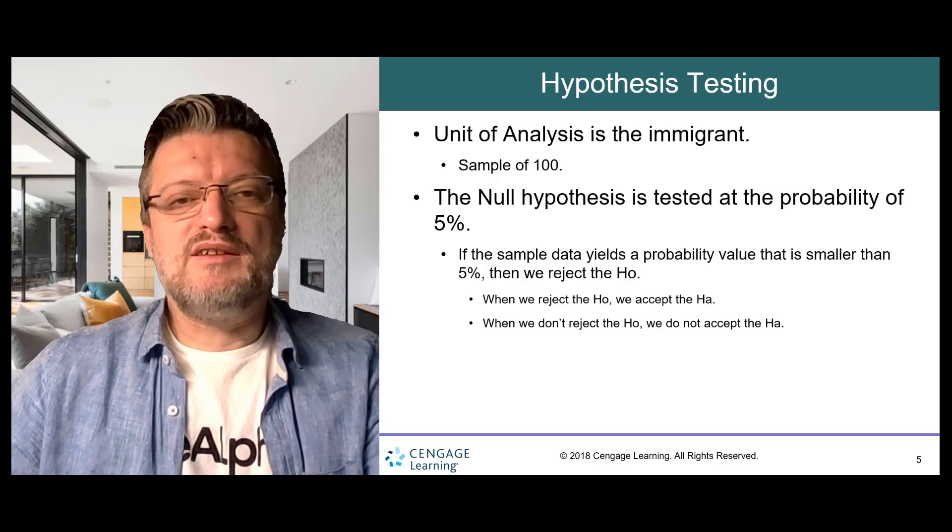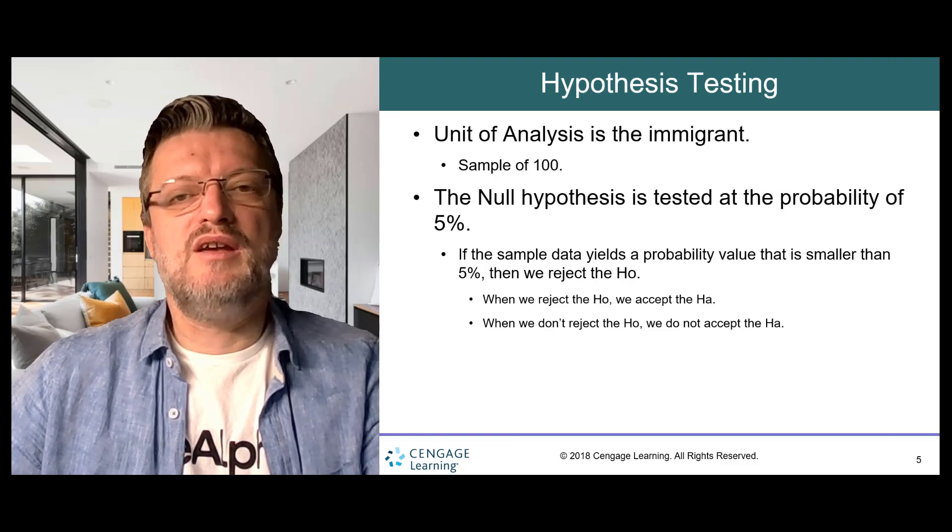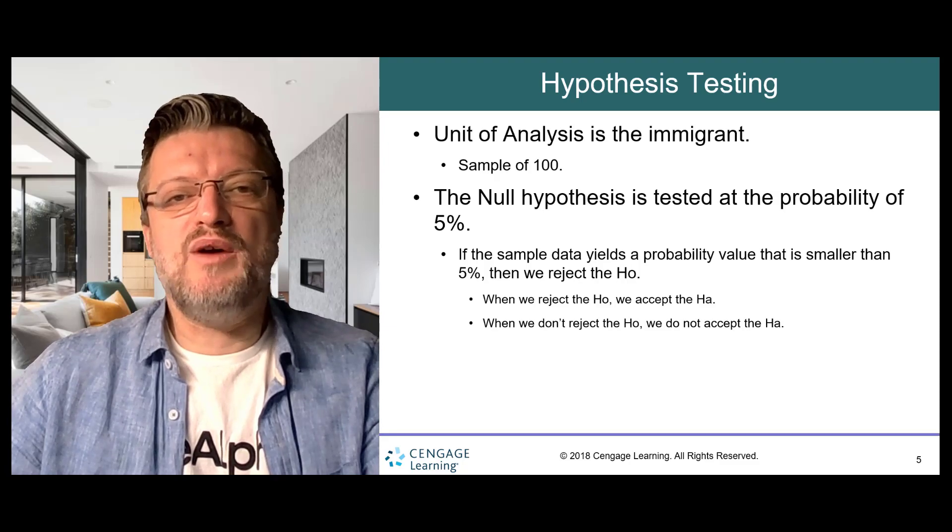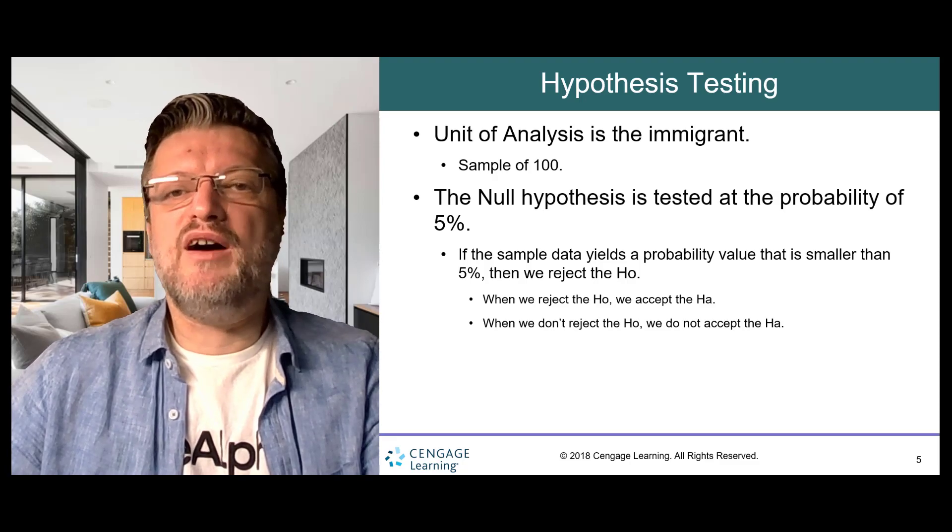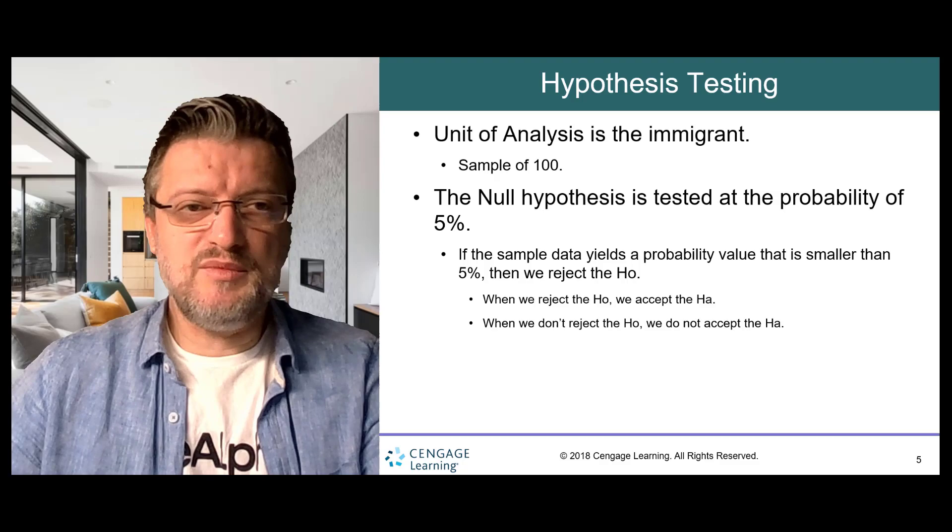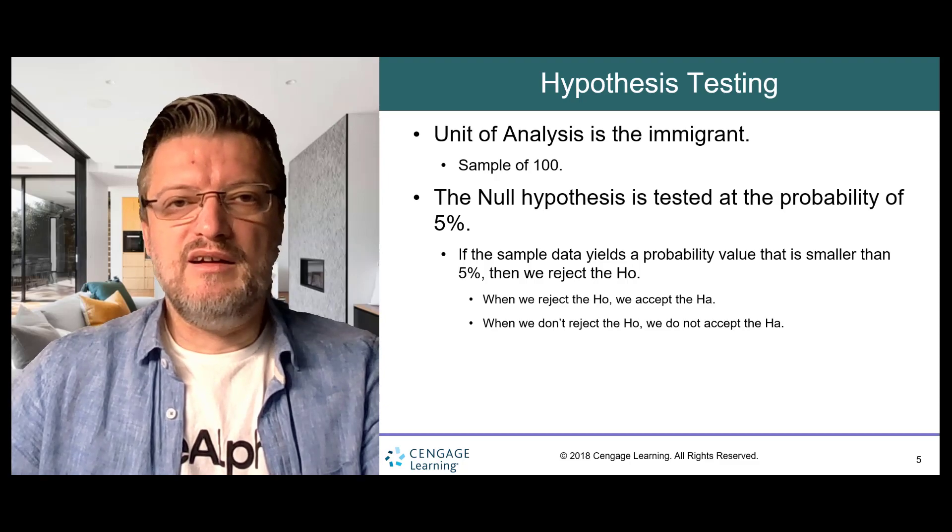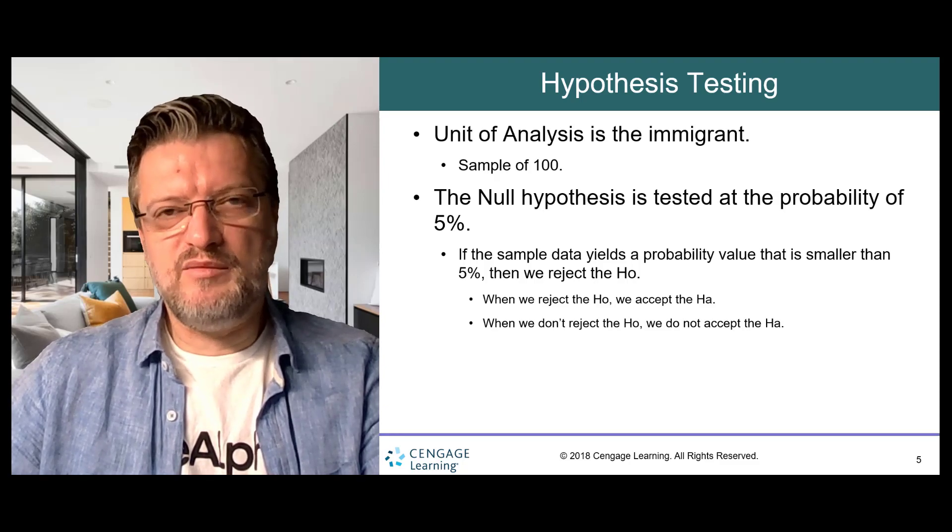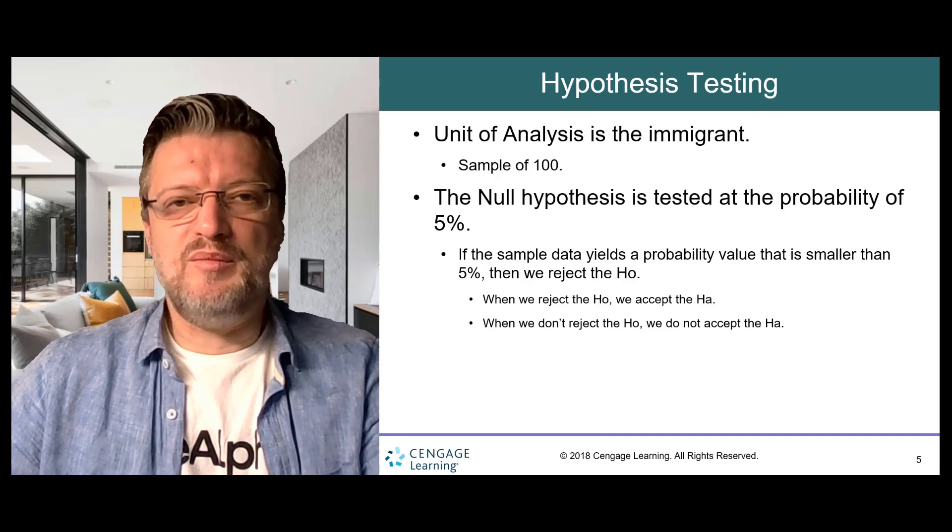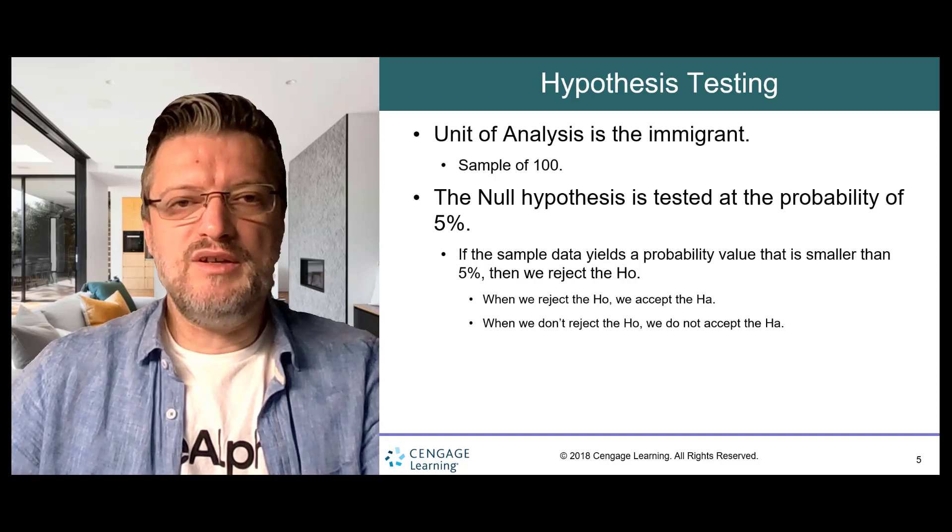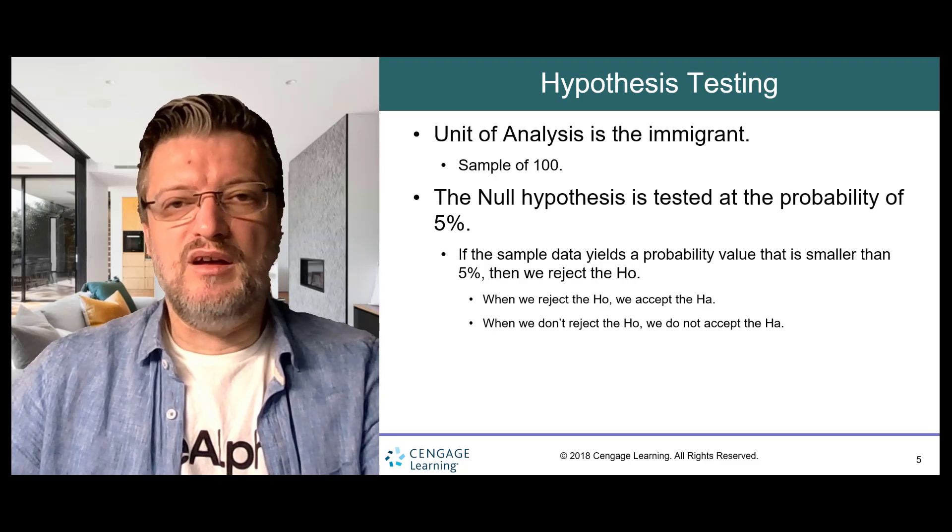The unit of analysis is the immigrant. In this example, we are taking a hypothetical sample of 100 immigrants with different immigration statuses, including those who have naturalized as US citizens. The null hypothesis is tested at the probability of 5%. This is an accepted threshold in social sciences research. Therefore, if the sample data yields a probability value that is smaller than 5%, then we reject the null hypothesis. When we reject the null, we accept the alternative hypothesis. When we don't reject the null, we do not accept the alternative hypothesis. We never say that we accept the null hypothesis.